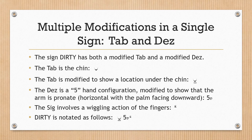Multiple modifications in a single sign — TAB and DES. The sign DIRTY has both a modified TAB and a modified DES. The TAB is the chin, modified to show a location under the chin. The DES is a five hand configuration, modified to show that the arm is pronate — horizontal with the palm facing downward. The SIG involves the wiggling action of the fingers. DIRTY is notated as shown.